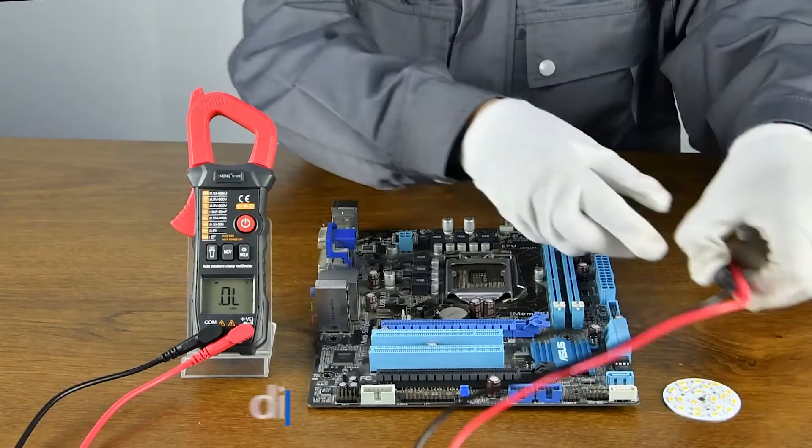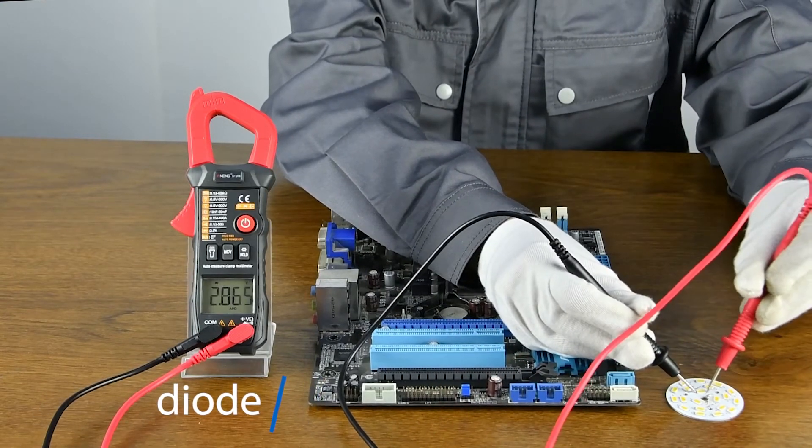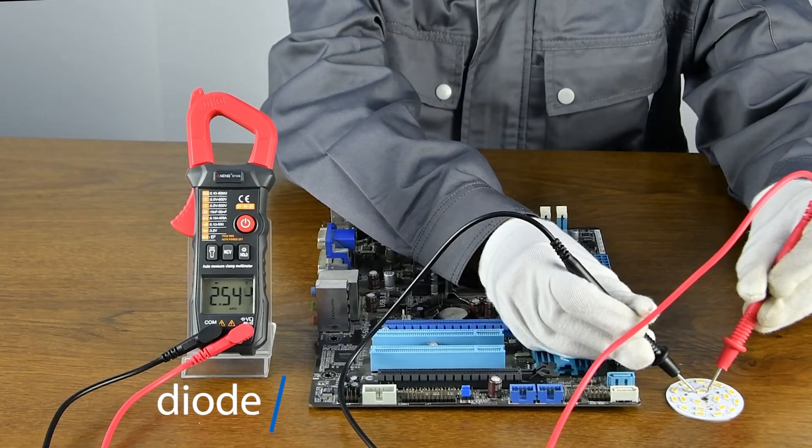Diode measurement, positive and negative powers need to be aligned.